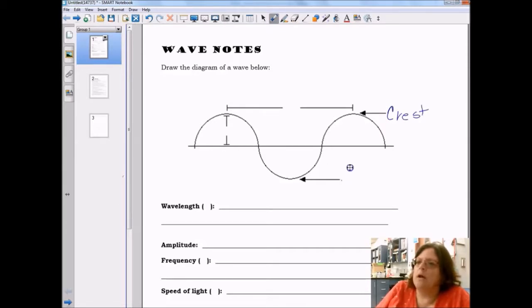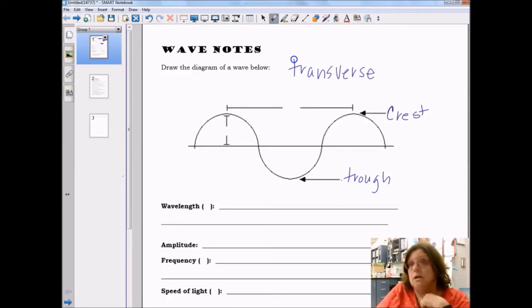The bottom of the wave is the trough and these are what we call transverse waves. As opposed to when you did earthquakes in 8th grade, you talked about primary waves, P waves.